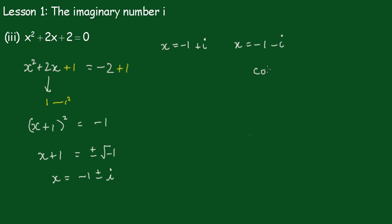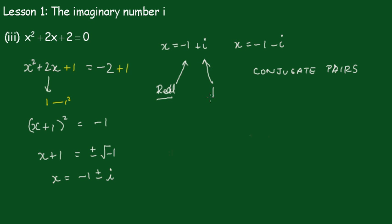These are known as conjugate pairs, and we'll talk more about conjugate pairs later on. The characteristic is they're the same numbers separated by different signs — a plus and a minus, same numbers, different sign in between. There are also two parts of a complex number: this first part here is called the real part, and this part here is the imaginary part. In the previous two examples we only had an imaginary part; here we have both a real and an imaginary part.